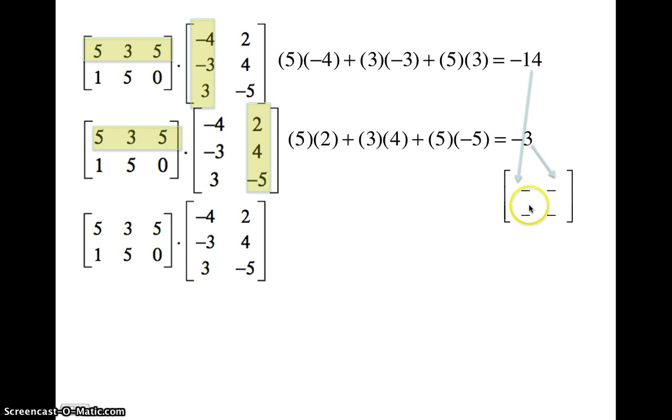Third product, we have to come up now with the two numbers that go in the second row. So we'll do row two, column one. So we multiply row two and column one. One times negative four, plus five times negative three, plus zero times three is negative 19. And that goes in the bottom left corner, row two, column one.